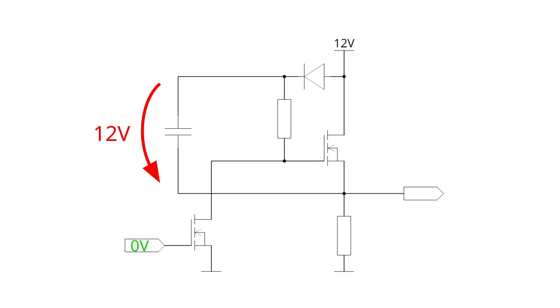When our input goes low, the first MOSFET turns off, and this means that the pull-up resistor brings the gate of the main MOSFET to 12V, and while this happens, the source also rises,